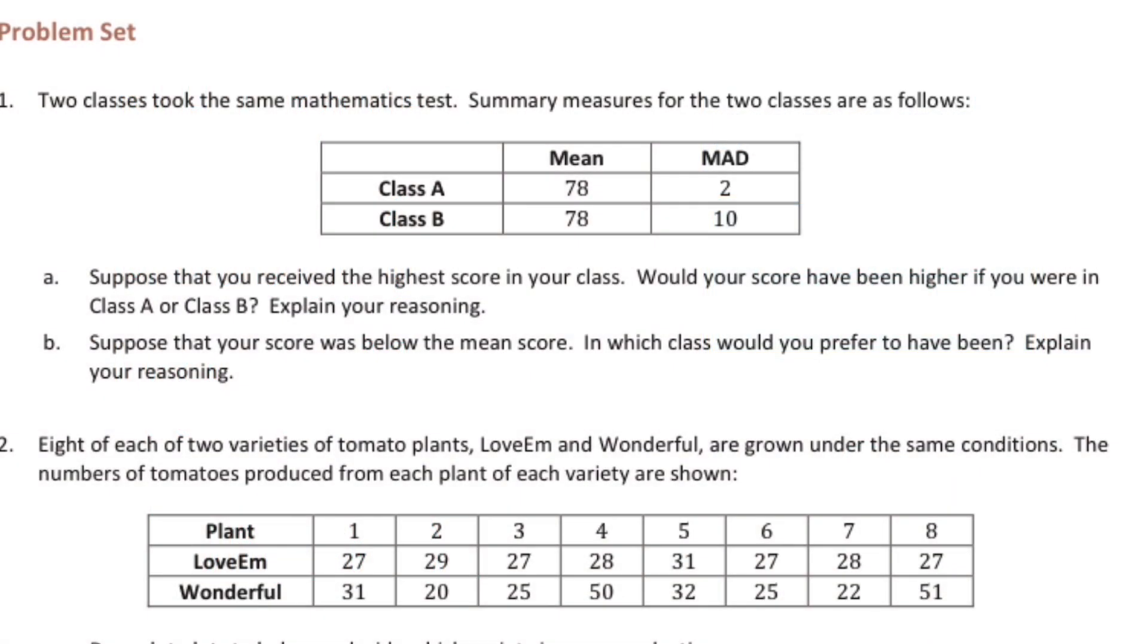Sixth grade Module 6, Lesson 11, Problem Set number one. Two classes took the same mathematics test. Summary measures from the two classes are listed below. Suppose that you received the highest score in your class. Would your score have been higher if you were in Class A or Class B? Explain your reasoning. So Class A has a mean of 78, and Class B also has a mean of 78, but a MAD, mean absolute deviation, of 2. So nothing really differed very far from the mean, so everything was kind of between like 76 and 80.